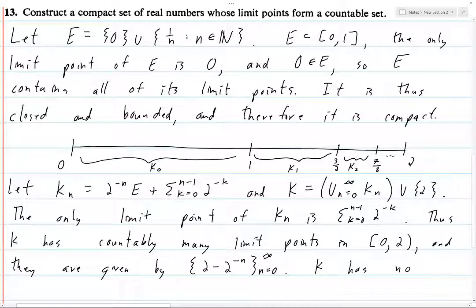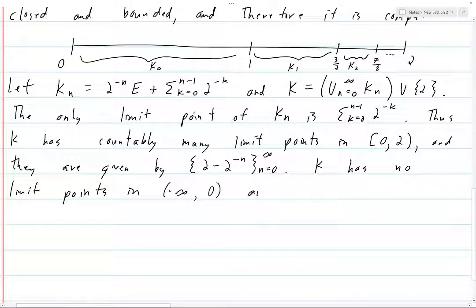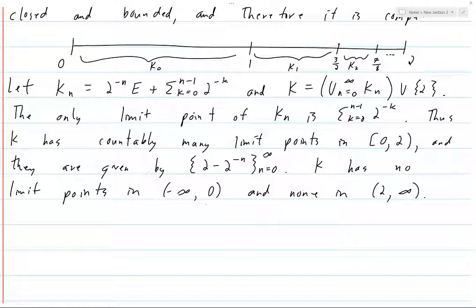K has no limit points in the interval from negative infinity to 0 (open), and none in the open interval from 2 to positive infinity. Any point less than 0 is strictly bounded away from every element of K. As for the interval (2, ∞), 2 is the rightmost element of K, so any element in (2, ∞) is strictly bounded away from 2, and you can fit an open neighborhood that contains no element of K.